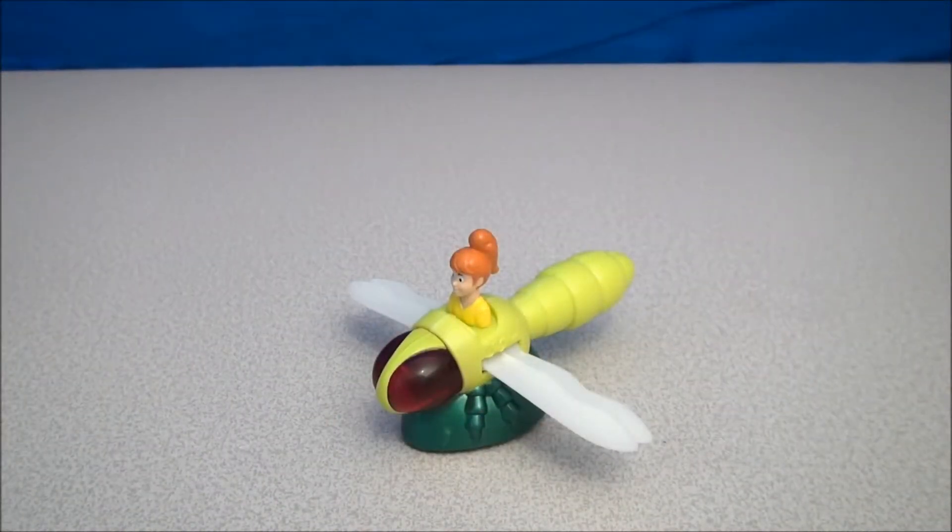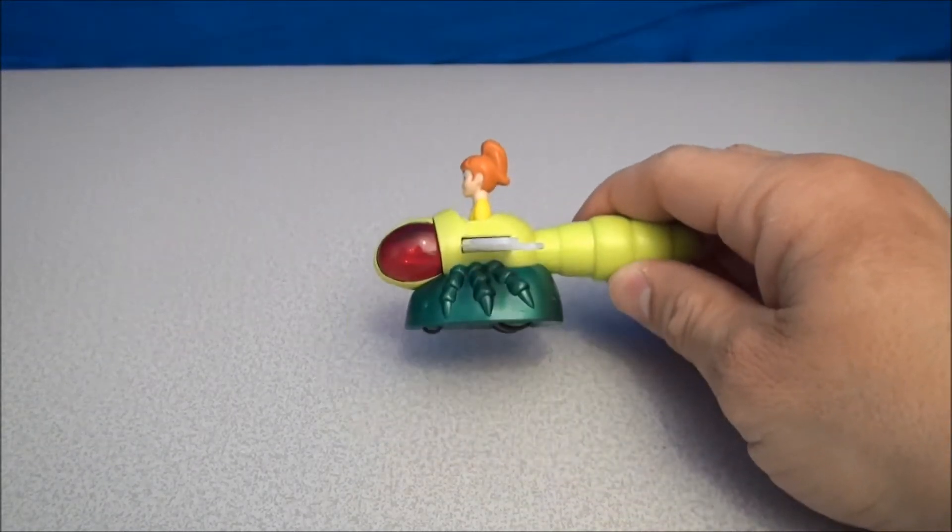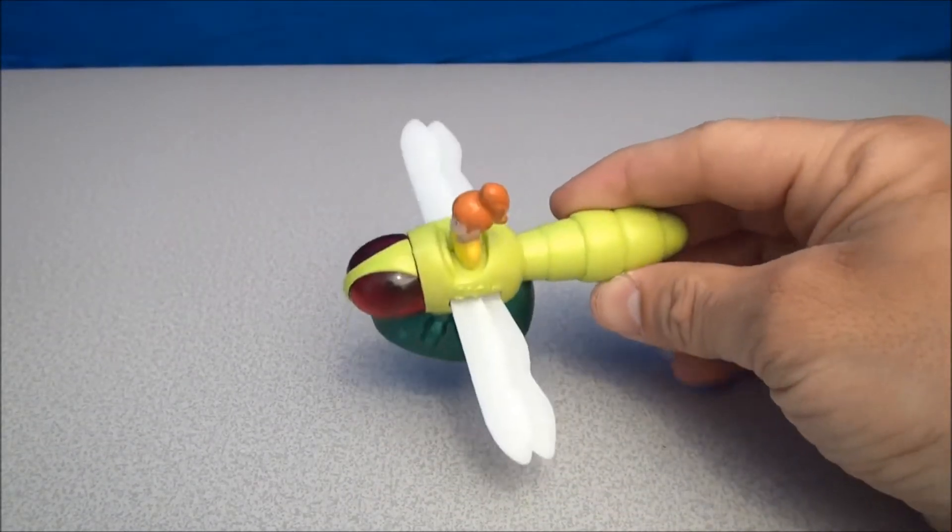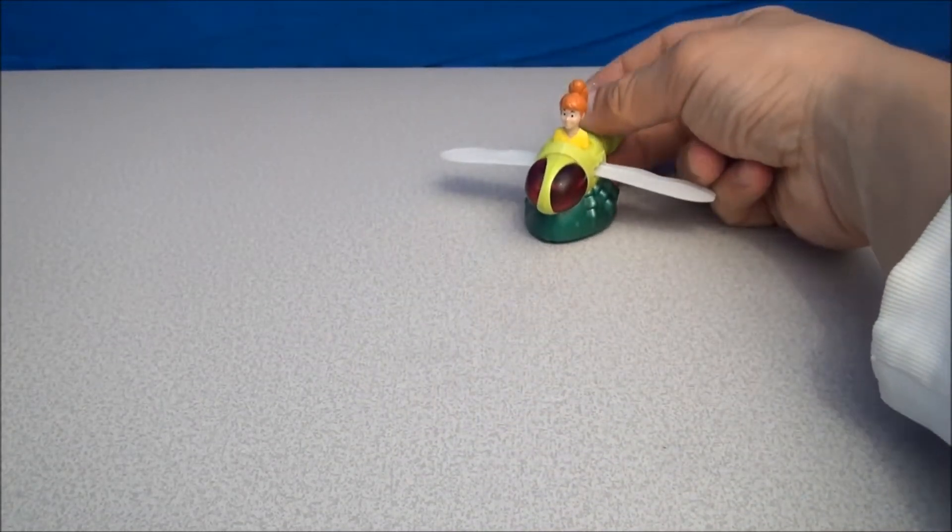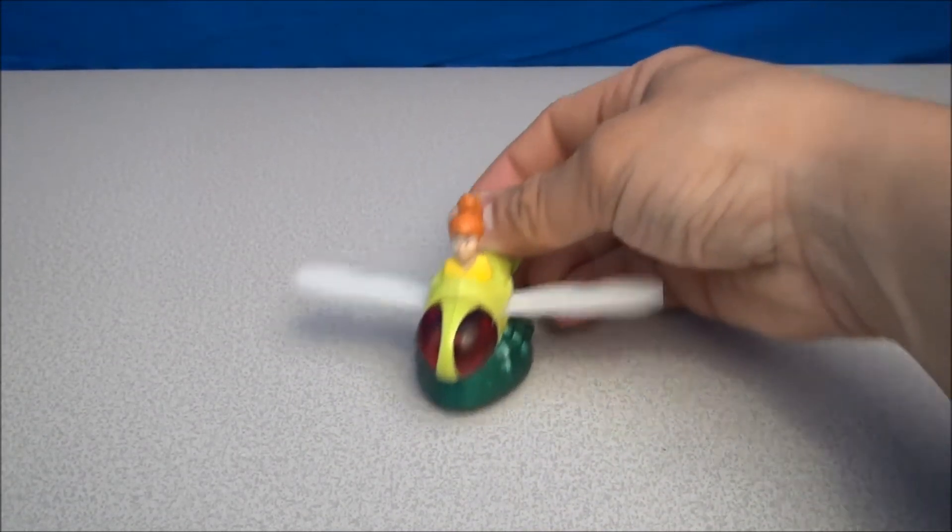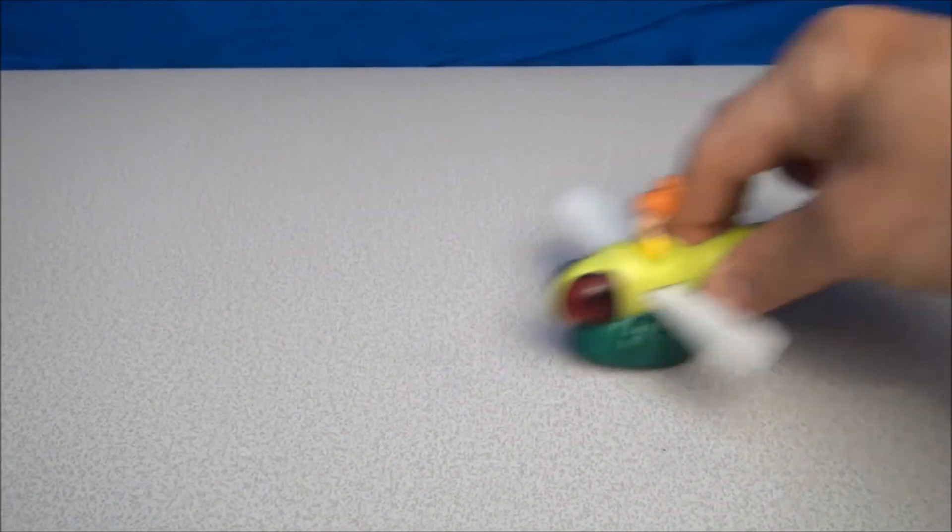First up we're looking at Boomer. There's a little girl inside of a dragonfly. It says Boomer on the side and this is a very cool toy because what you do is you grab this thing by its abdomen or tail or whatever and if you can get it going fast enough, I don't know if you can see this, but it's the eyes.